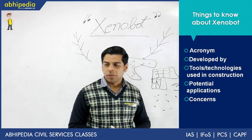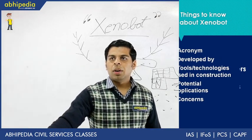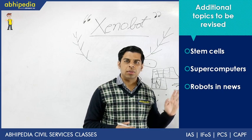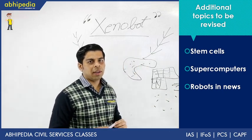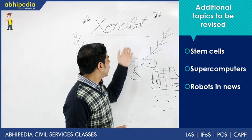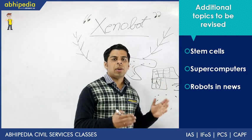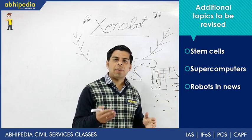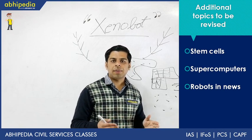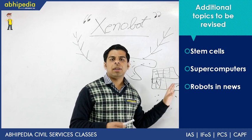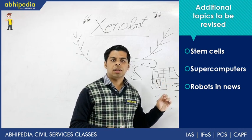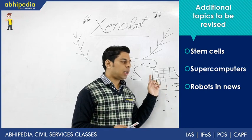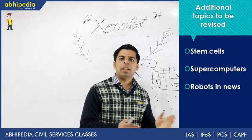Now let's discuss associated topics to revise alongside this topic. The first is stem cells, since the Xenobot journey started from isolating embryonic stem cells from Xenopus. Stem cells are biological cells derived from multicellular organisms capable of self-renewal and differentiation into specialized cells. You should cover embryonic, fetal, and adult stem cells, the ethical debate, and their potential applications — a stem cell question has already been asked in UPSC, so basic properties like self-renewal, potency, and undifferentiated state are important.